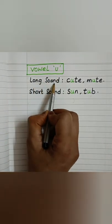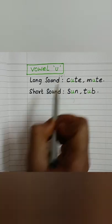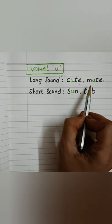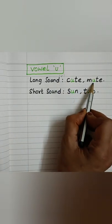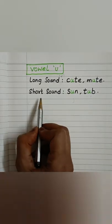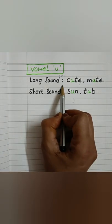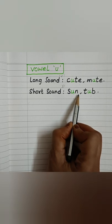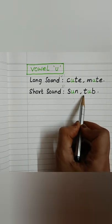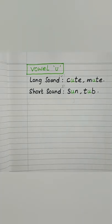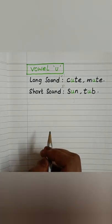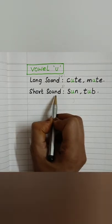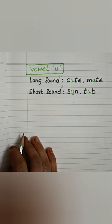Vowel U. The long sound of U is 'U' — K, U, T: Cute. N, U, T: Nude. The short sound of U is 'u' — S, U, N: Sun. T, U, B: Tub. So the short sound is when we read the letter sound with the letter.